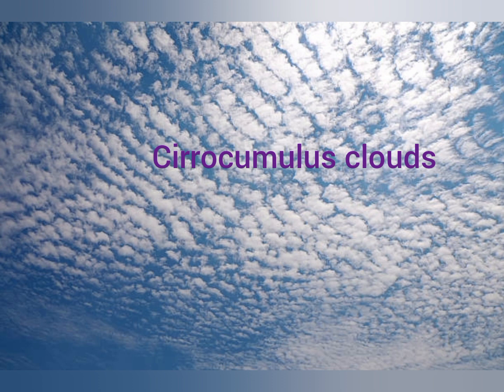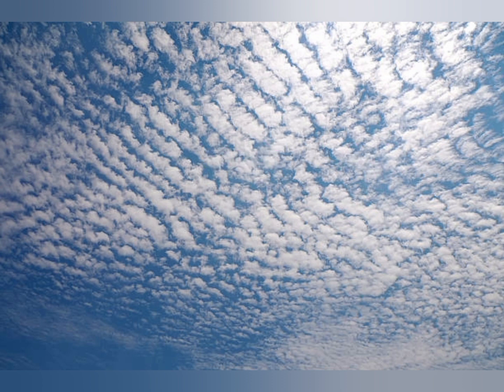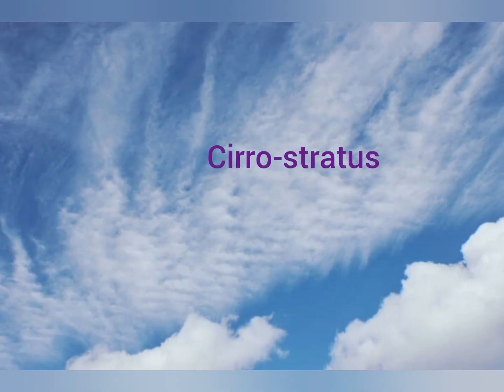The next type of high cloud is the cirrocumulus. These clouds appear in the form of patches which can be seen as white flakes. They also resemble the ripples which form on the seashore, and they spread all over the sky, forming what is called a mackerel sky.